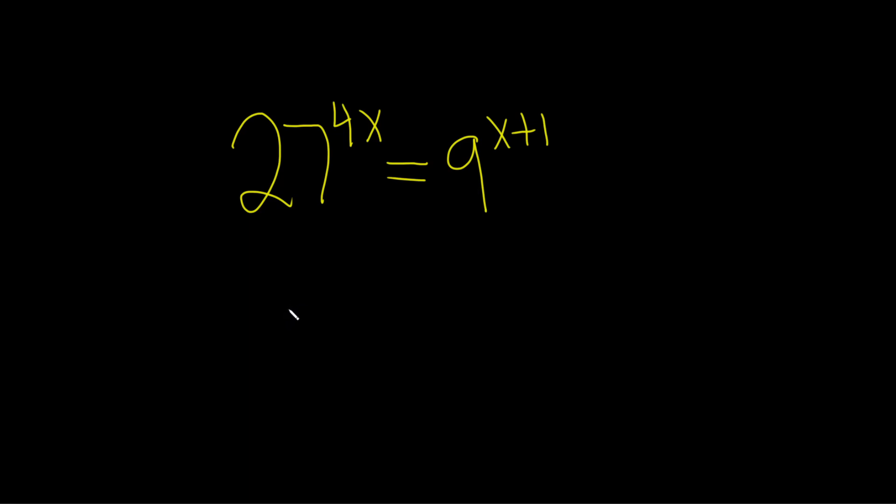Hi everyone, in this problem we have an exponential equation, and our goal is to write it using the same base on both sides. If we can come up with something like b to the x equals b to the y, then we can drop the b's and set x equal to y.